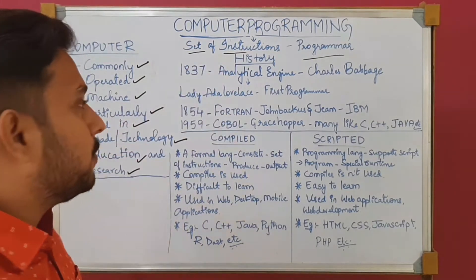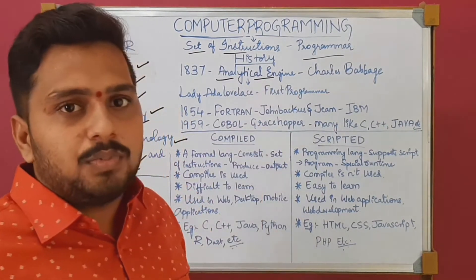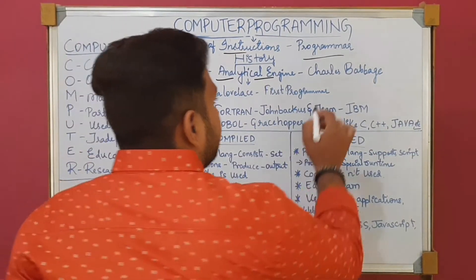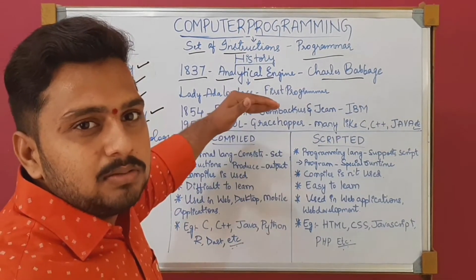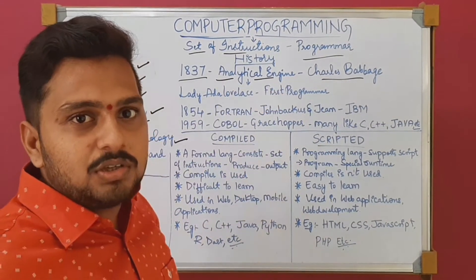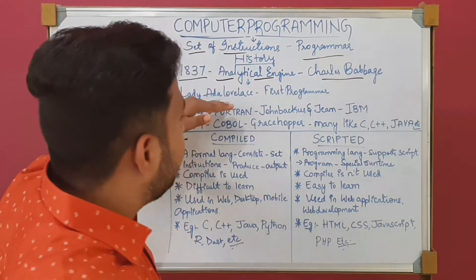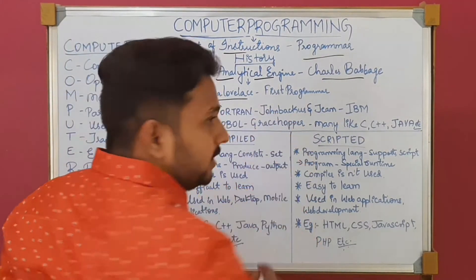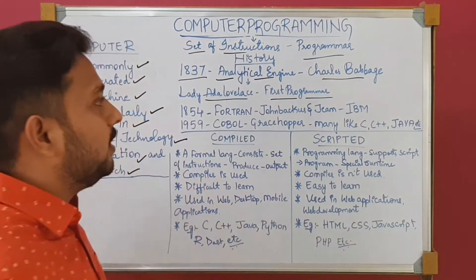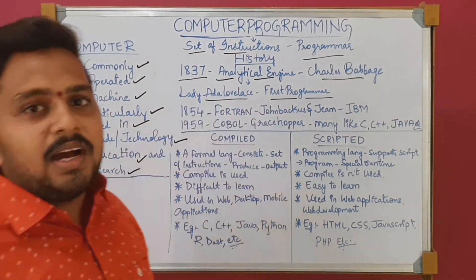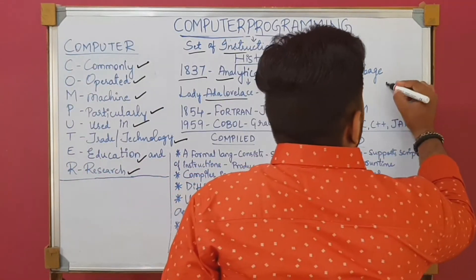Let us know some history about computer programming. As we all know, the Analytical Engine was the first computer, invented by Charles Babbage in 1837. But it's also a machine — it has to be given some instructions or input to perform a specific task. At that time, Charles Babbage along with Lady Ada Lovelace — she is known as the first programmer in the world — worked together.